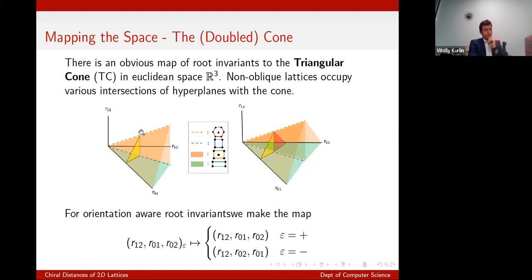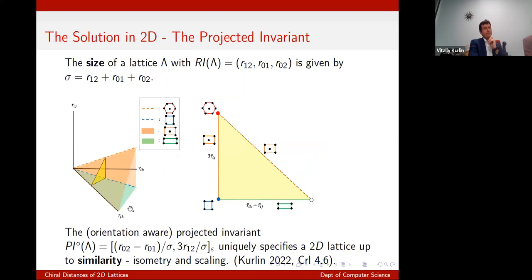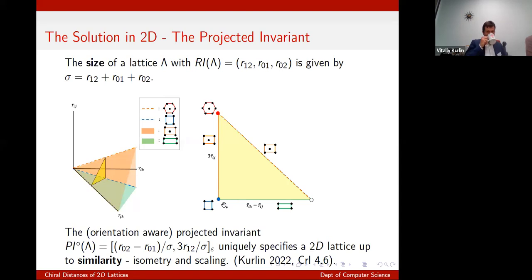We may not care about scaling. Not caring about scaling means using the determinant volume of the lattice as a size marker, but that's geometrically awkward in terms of the linear algebra. What we'd like is to drop a hyperplane through this thing, which we do by defining size as just the sum of the root invariants. That gives us the projected invariant.